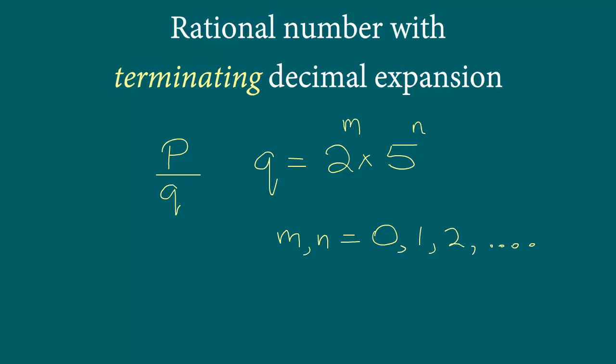Now in this video, let's find out if the opposite is true. What do we mean by that? Meaning if it is given to us that we have a rational number and the denominator of the rational number contains prime factors which can be expressed in this form, then does it mean that that rational number will always have terminating decimal expansion?